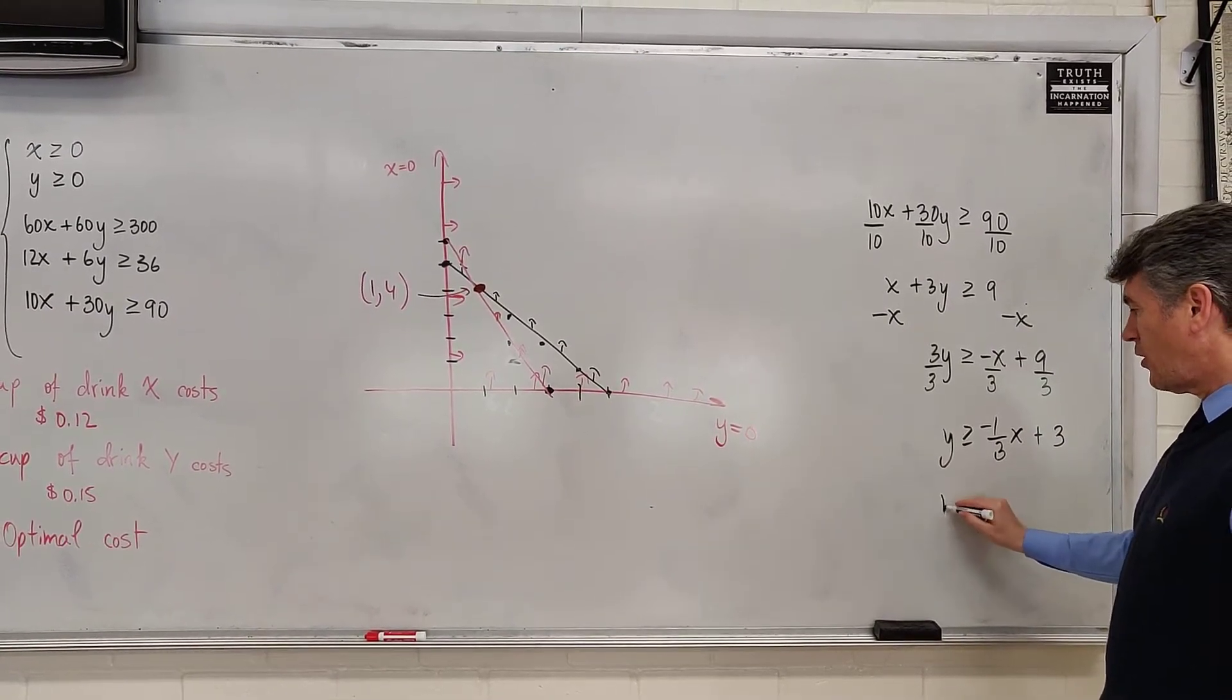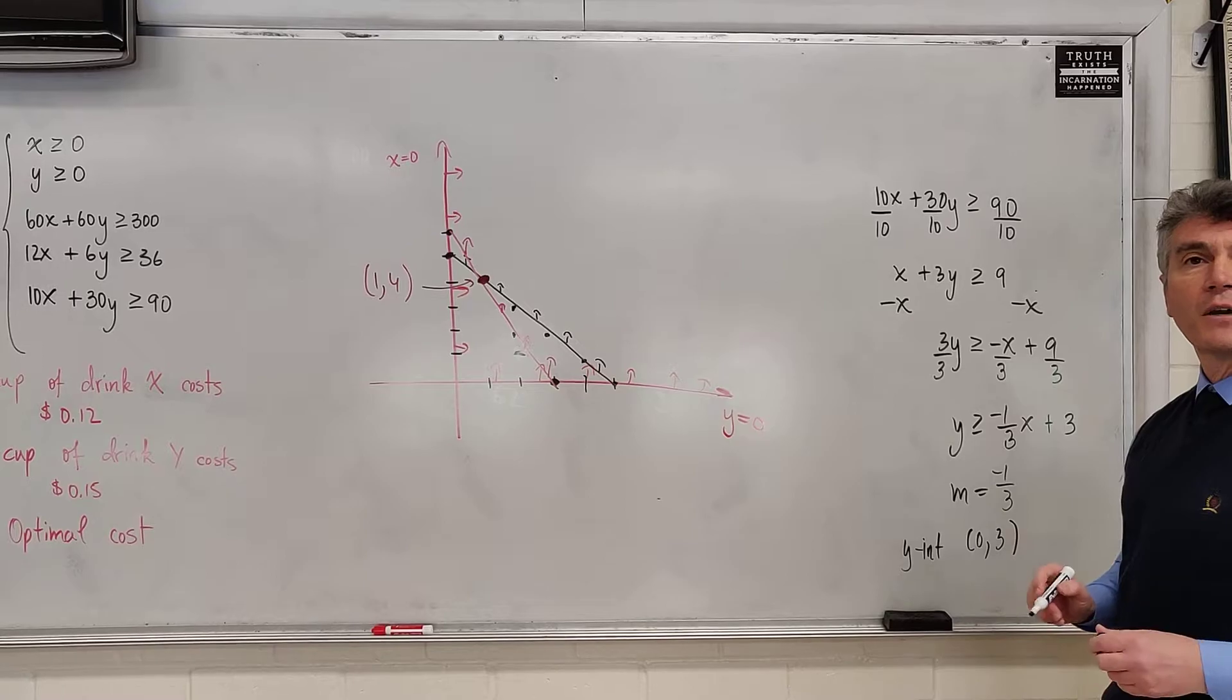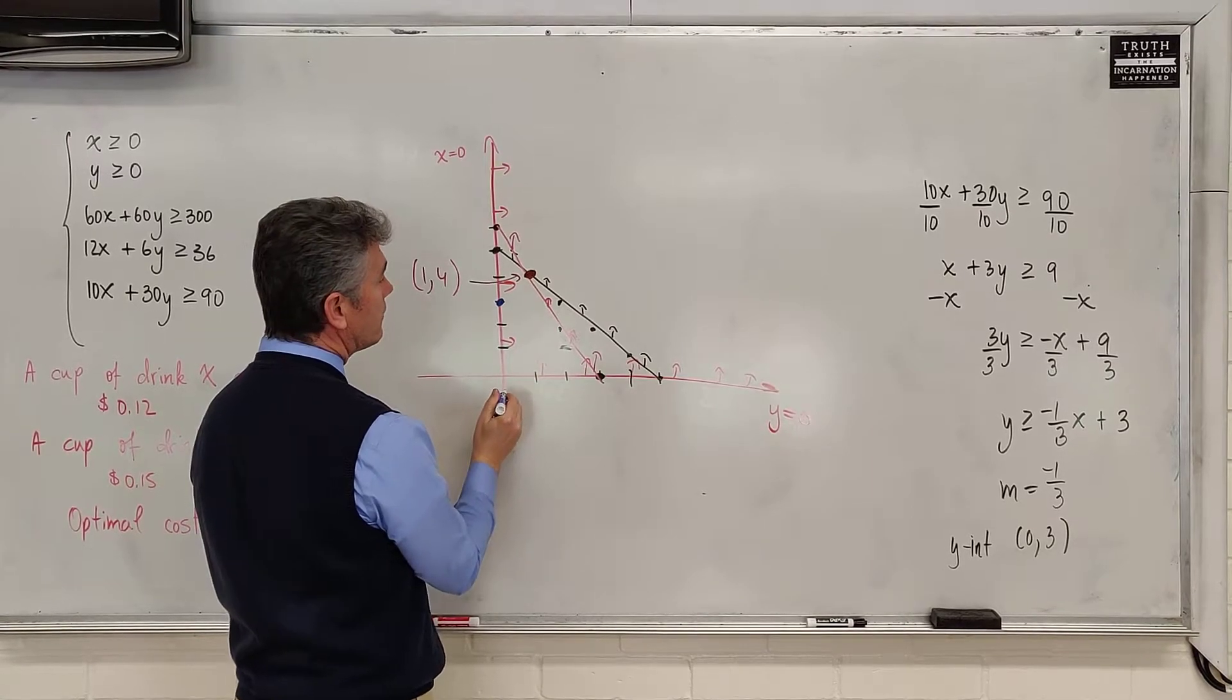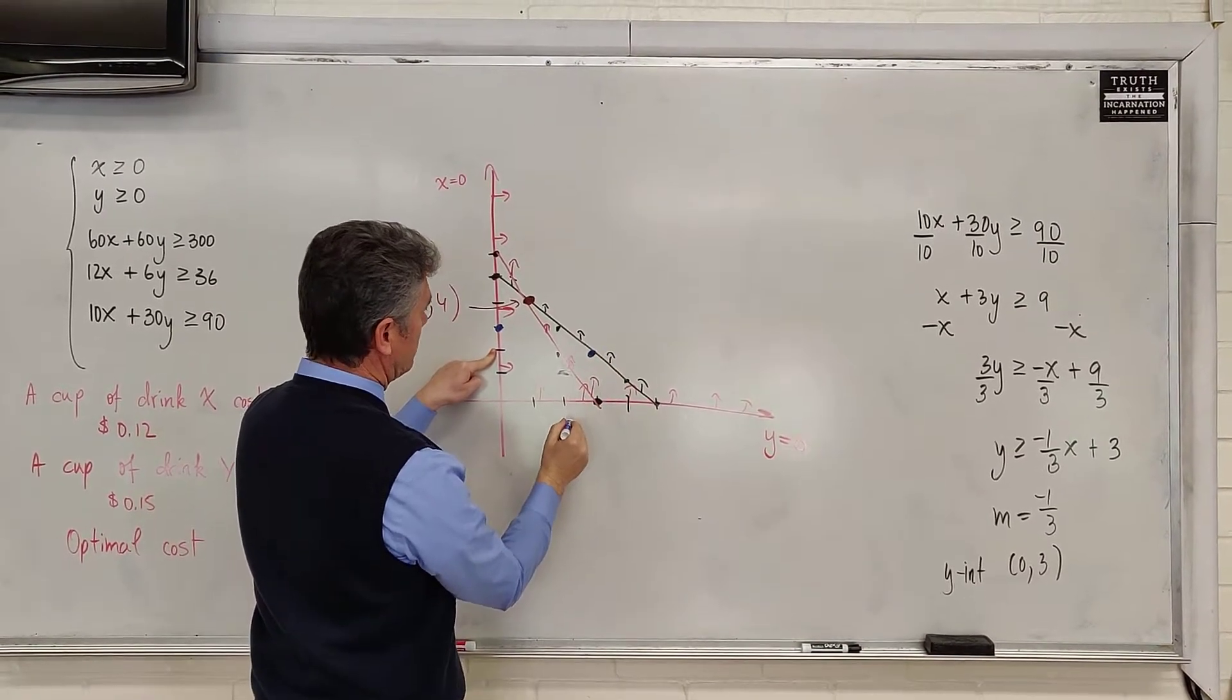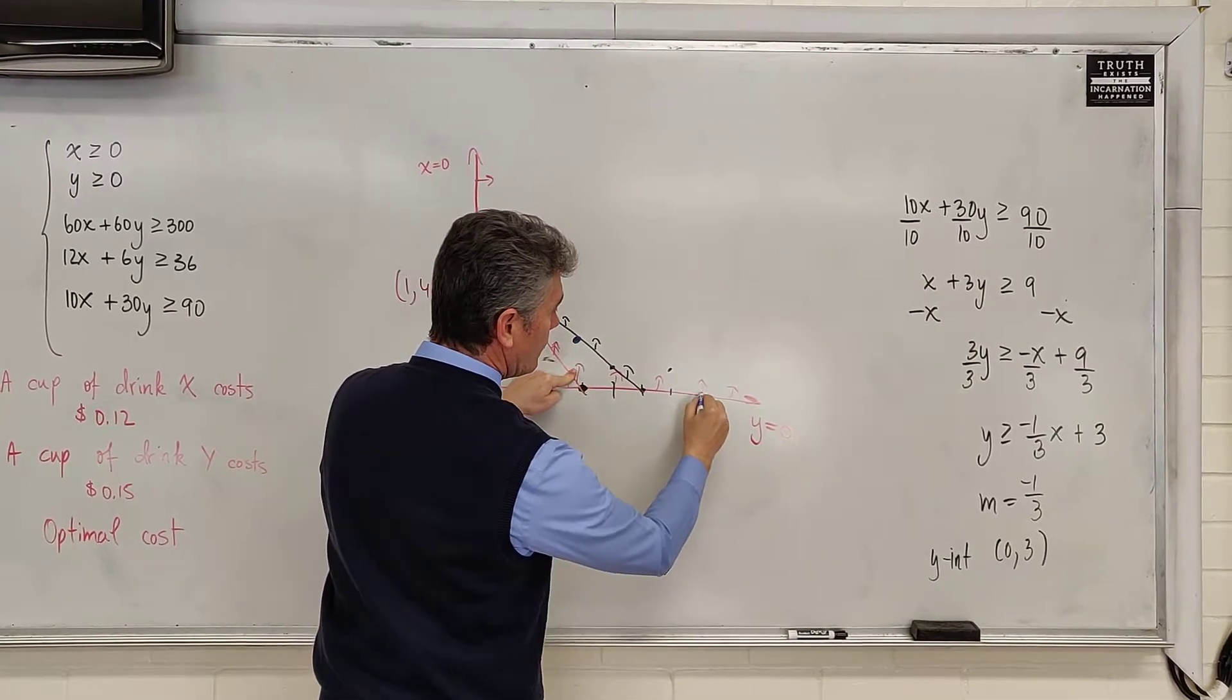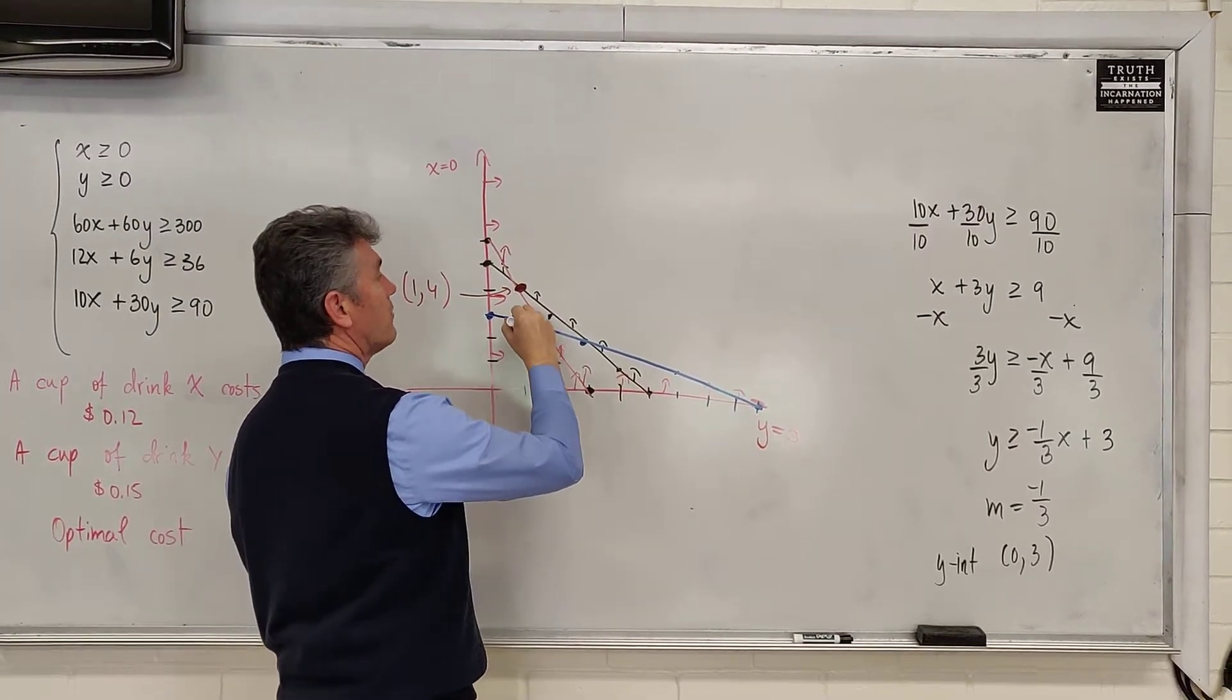For the last time, the slope is negative 1 third. The y-intercept is 0 comma 3. We have all the information that we need to graph. We take another color marker. Start with the y-intercept, 0 comma 3. From there, go one down, and then 1, 2, 3 to the right. And then, go one down, and another 3 to the right. And finally, you will intersect the x-axis as 0 comma 9. Now, shading above this line.